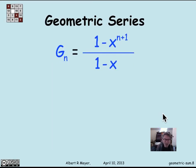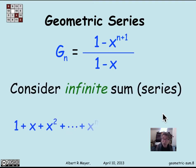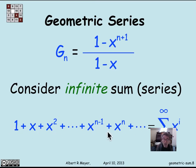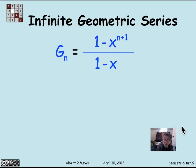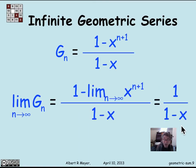A geometric series — I use the word sum for a finite sum — is when you take an infinite sum. The infinite geometric series is 1 plus x plus x squared, continuing forever: the sum from i equals 0 to infinity of x to the i. There's a simple formula for that — even simpler, actually.